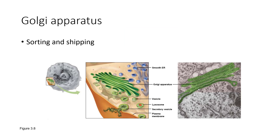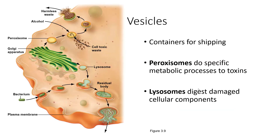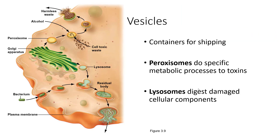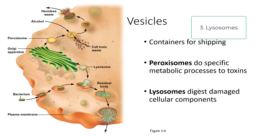The Golgi apparatus gives proteins their destinations. Some proteins will be put into lysosomes, which digest things. A protein that needs to be secreted will be put in a vesicle for secretion. The enzyme catalase will be put in a peroxisome — these are all different types of vesicles, containers for shipping made by the Golgi apparatus. Lysosomes will digest damaged cellular components, and secretory vesicles go to the outside world. If a protein needs to be sent to the nucleus, it will be sent in a vesicle from the Golgi apparatus back to the nucleus, since the nucleus does not make or ship its own proteins.